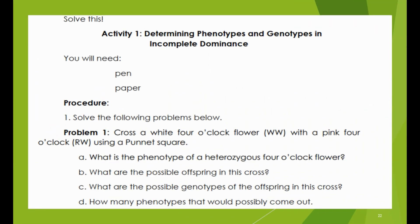Now go to page 10 and try to solve the activity: Determining Phenotypes and Genotypes in Incomplete Dominance. You will need a pen and your activity notebook. Problem 1: Cross a white 4 o'clock flower with a pink 4 o'clock flower using a Punnett square. A. What is the phenotype of a heterozygous 4 o'clock flower? B. What are the possible offspring in this cross? C. What are the possible genotypes of the offspring? D. How many phenotypes will possibly come out?